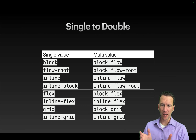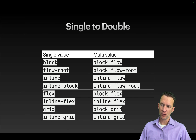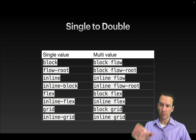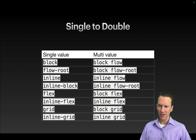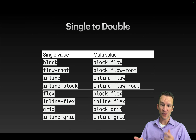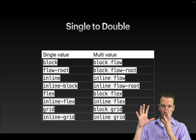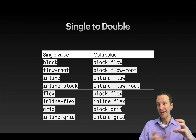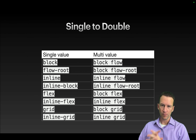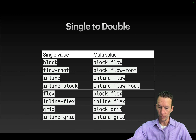Here's a table of old single-value display keywords mapped to the new two-keyword values. Old 'block' is now 'block flow'. 'Flow-root' is 'block flow-root'. 'Inline' is 'inline flow', and so on. The old inline-flex is now 'inline flex', and grid is 'block grid', referring to the parent element and the child element layout.